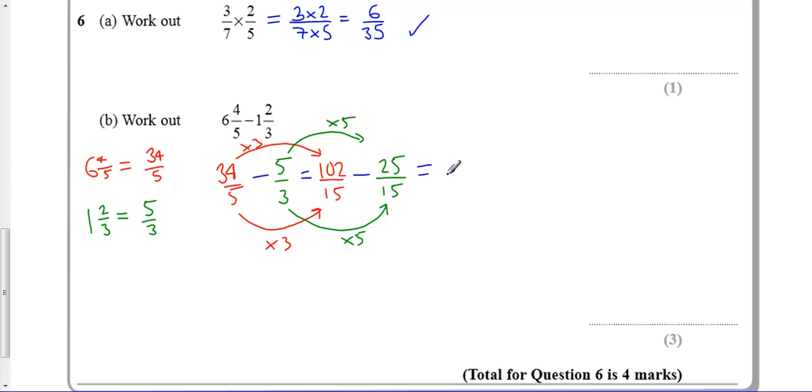Now that allows me to do the subtraction all in one go. Now it's out of 15. 102 minus 25 is 77. 77 fifteenths. And that's my answer.